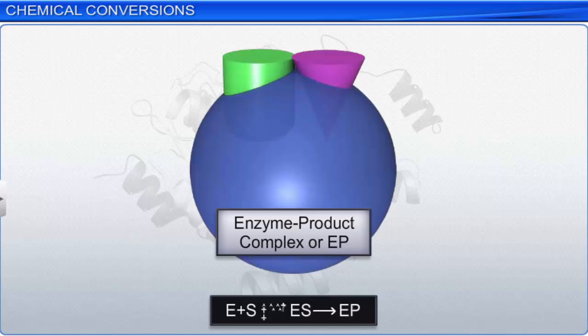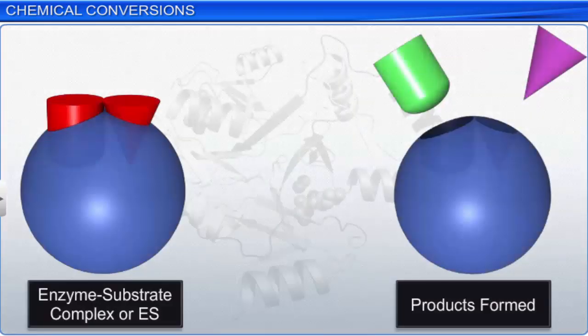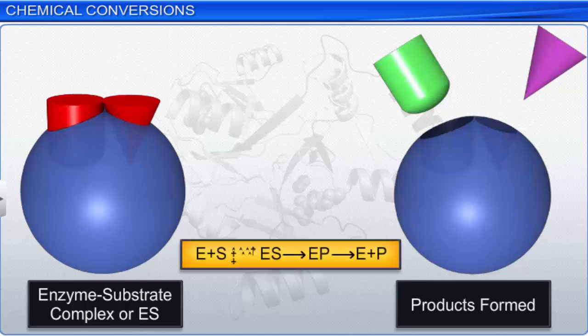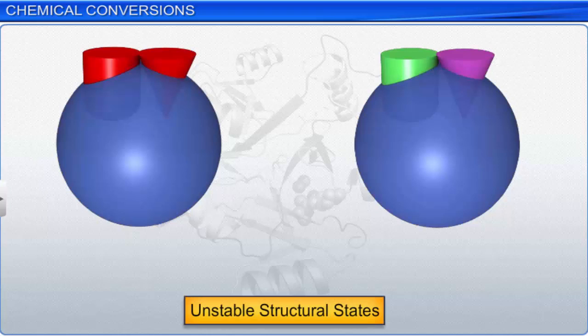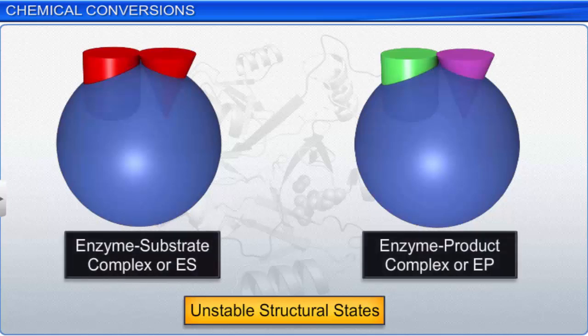The EP complex is also unstable. Finally, in the fourth step, the structure of the substrate is transformed into the structure of the products. During the enzyme action, there can be many temporary unstable structural states between the stable substrate and the product — E-S and E-P complexes. These states are also known as altered structural states.